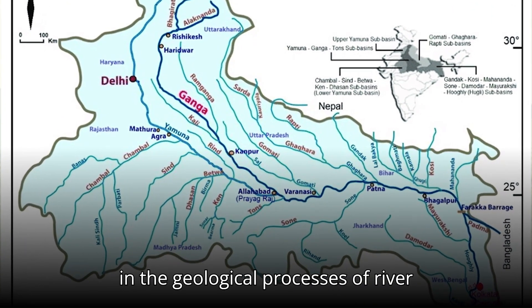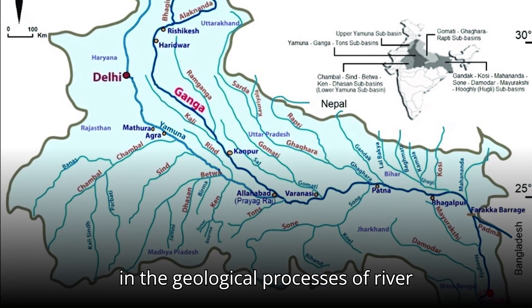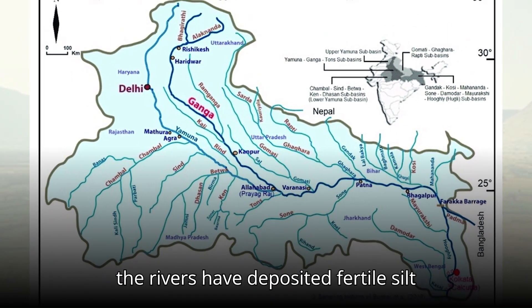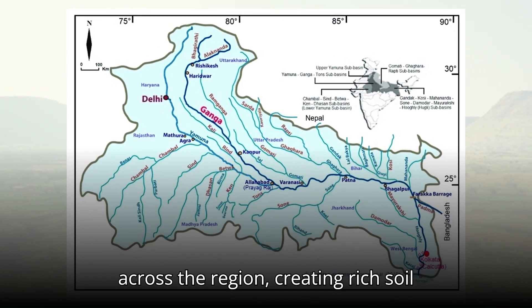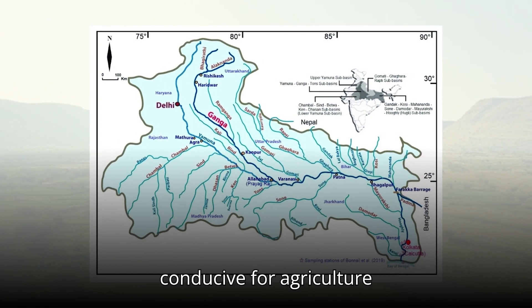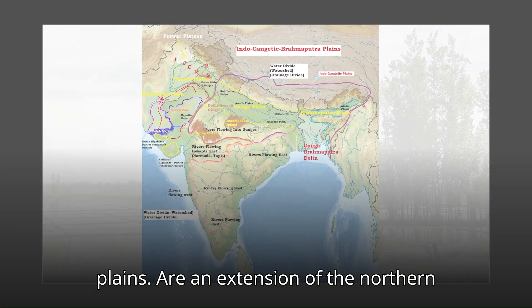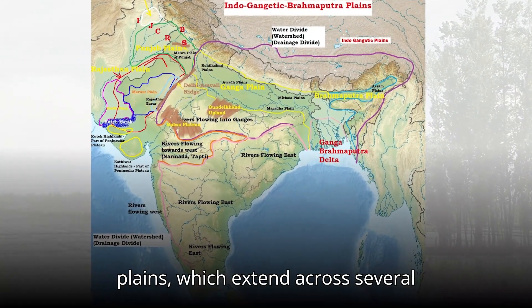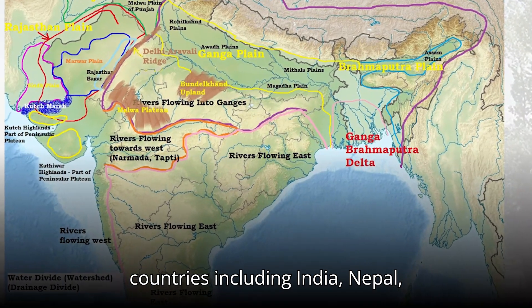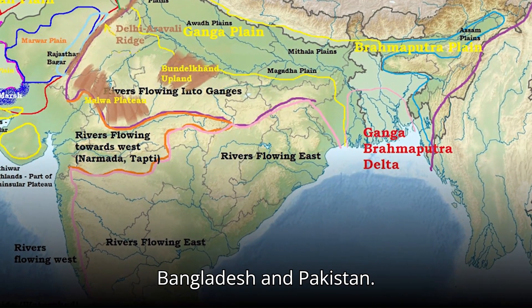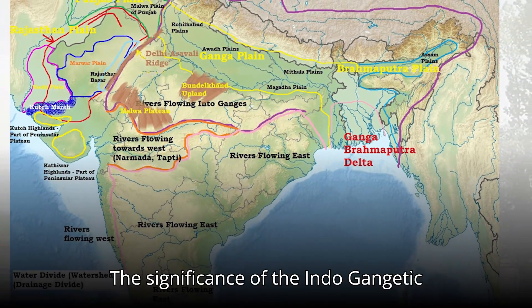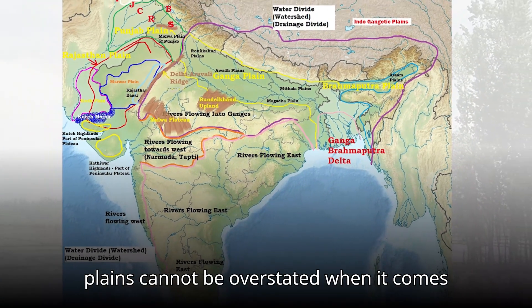The origin of the Indo-Gangetic Plains lies in the geological processes of river sedimentation. Over millennia, the rivers have deposited fertile silt across the region, creating rich soil conducive for agriculture. These plains are an extension of the northern plains, which extend across several countries including India, Nepal, Bangladesh, and Pakistan.